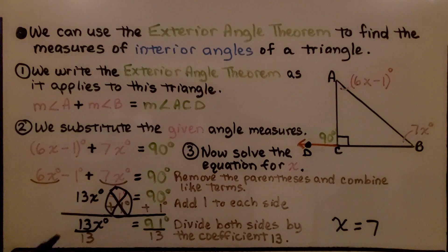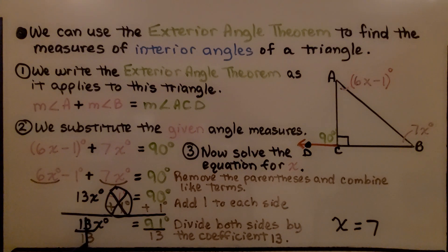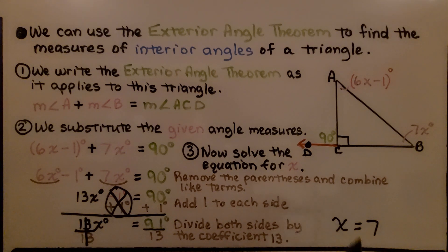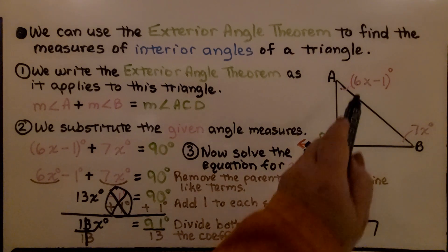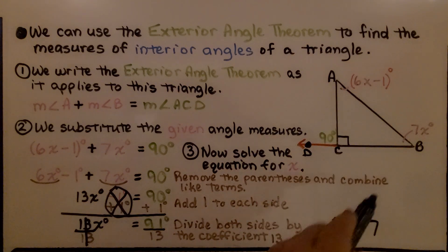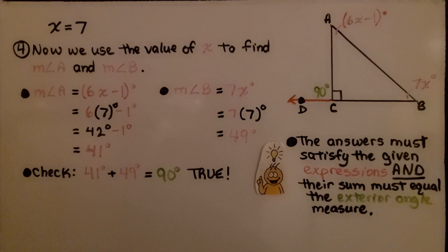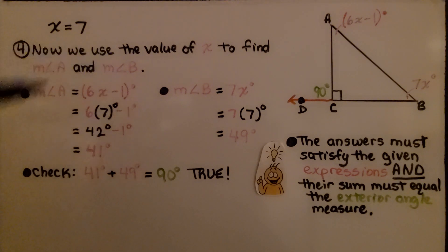We divide both sides by the coefficient 13. 13 over 13 gives us 1x degrees, and 91 degrees divided by 13 gives us 7. So x is equal to 7. But we're not done, because we still need to evaluate 6x minus 1 degree and 7x degrees using x equals 7.